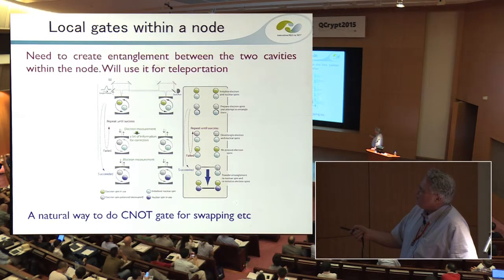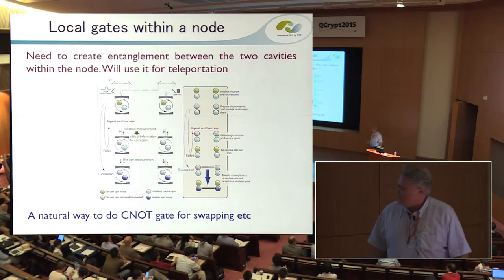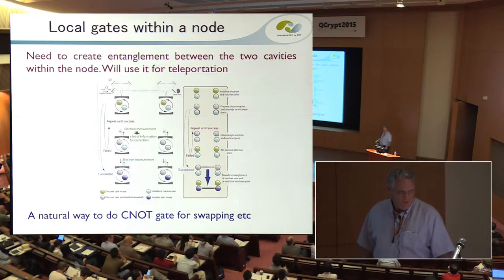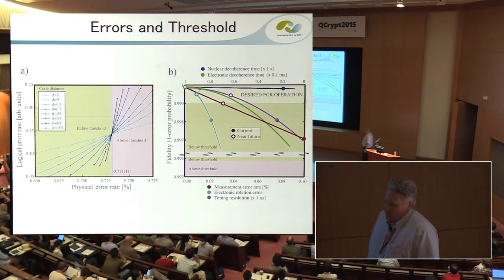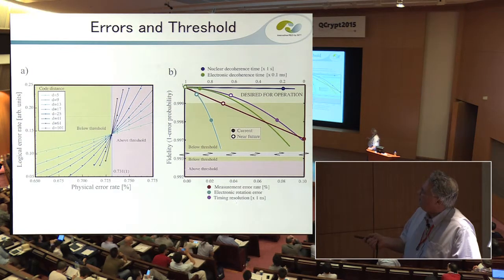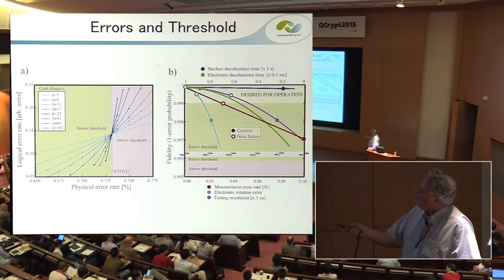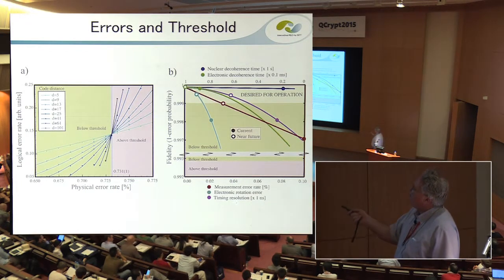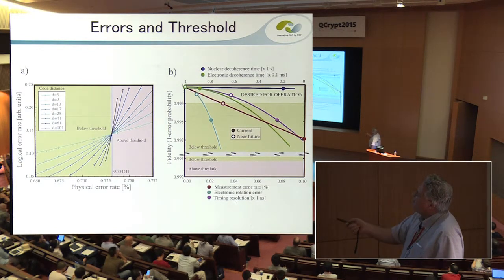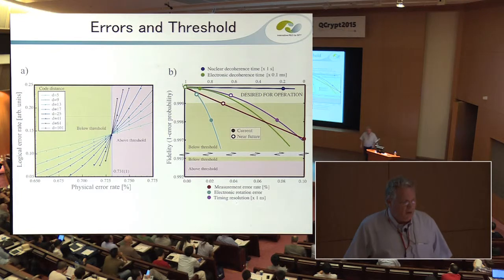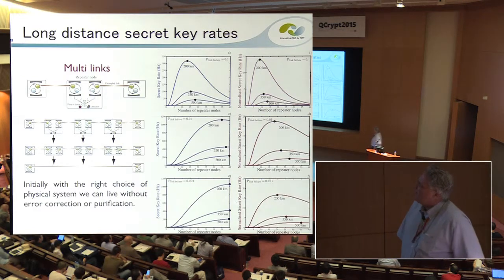Once the information is in the electron spins we can transfer it to the nuclear spins via local operations, allowing entanglement swapping within the local node via CNOT gates. Experimentally, looking at the state required for quantum computation: for almost all areas we are below threshold. The nuclear spin coherence times, electron spin coherence times, measurement error rates, rotation error rates, and timing resolution look feasible — some are technically in the fault-tolerant regime but not at our desired level — giving us the components to start doing repeaters.